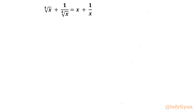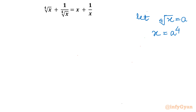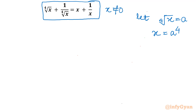So let's get started. I will give our substitution. Let 4th root of x equal to a. If I raise both sides to power 4, I can write x will be equal to a to the power 4. And from the original equation we can conclude x cannot be 0 — the denominator cannot be 0. So from here we can say a also cannot be 0.